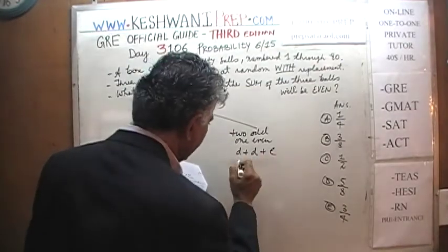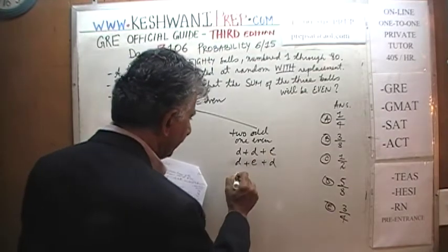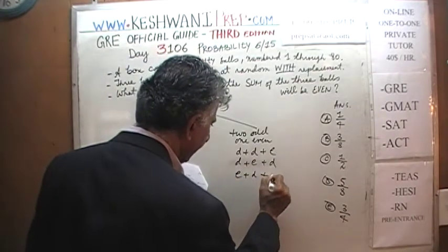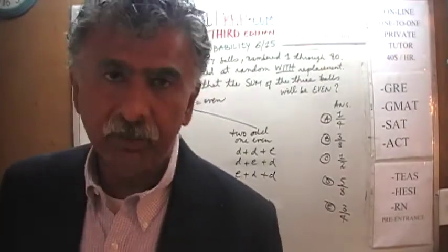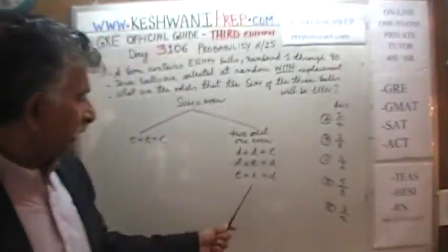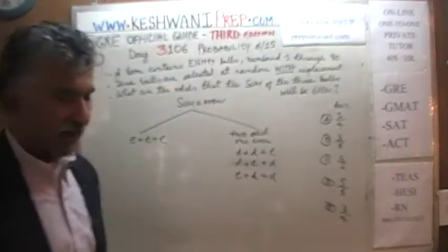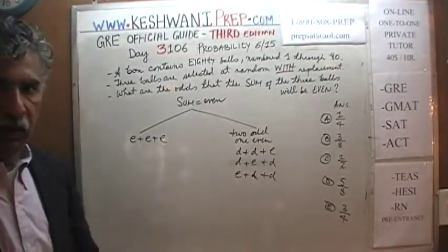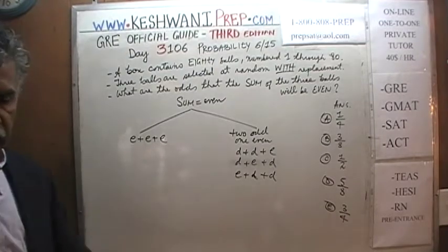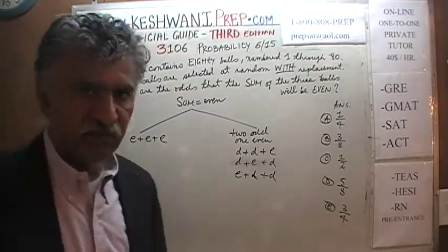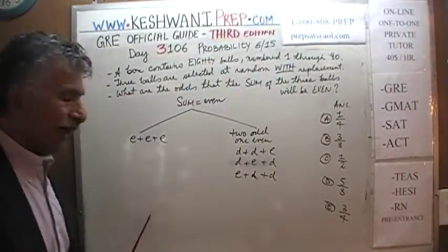For any combination where we have two odd and one even: we can put even in the middle — odd plus even plus odd — or we can put even in the front: even plus odd plus odd. In other words, the first bowl drawn has an even number, the second has an odd number, and the third also has an odd number, in which case their sum is going to be even.